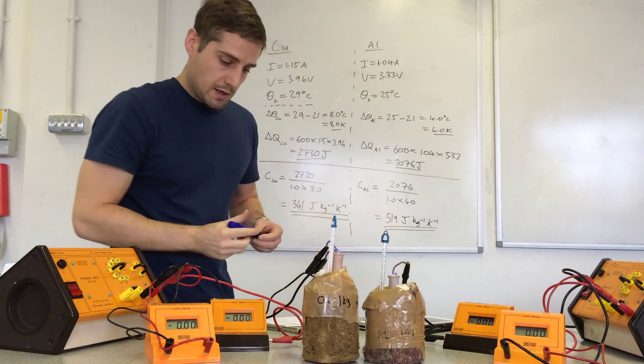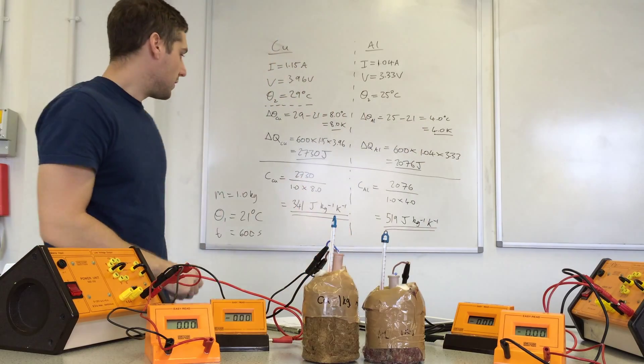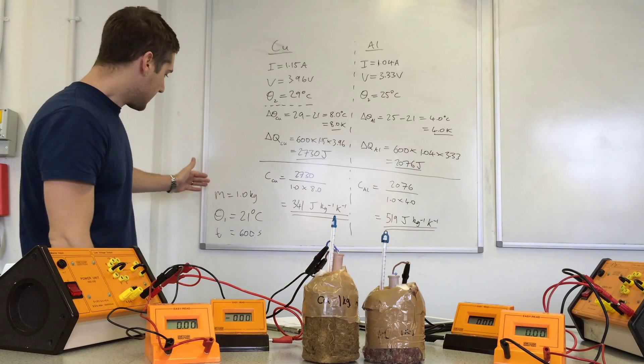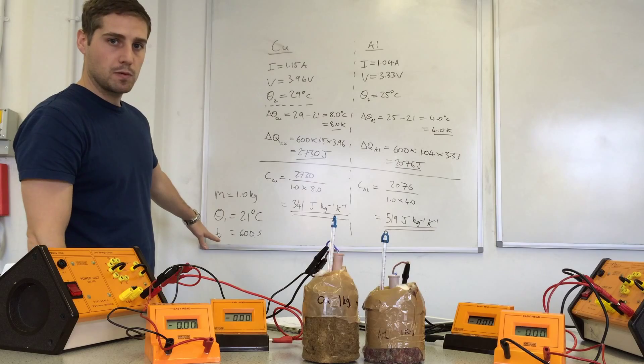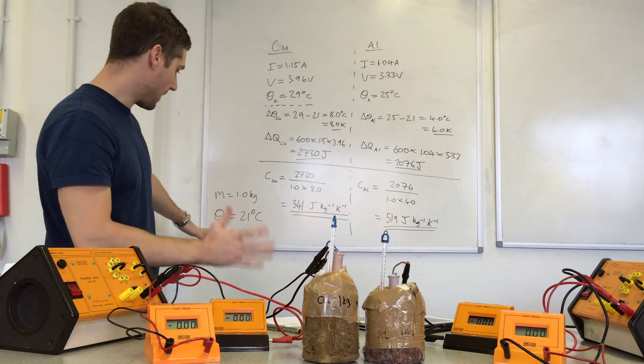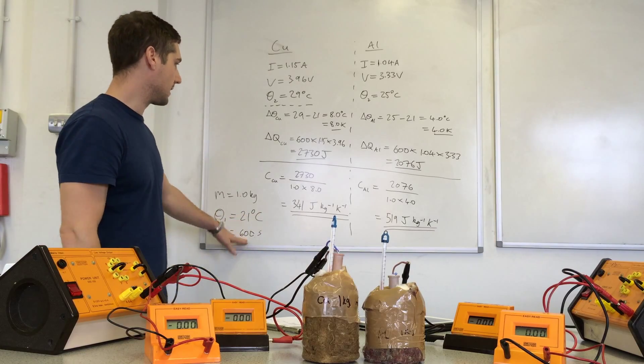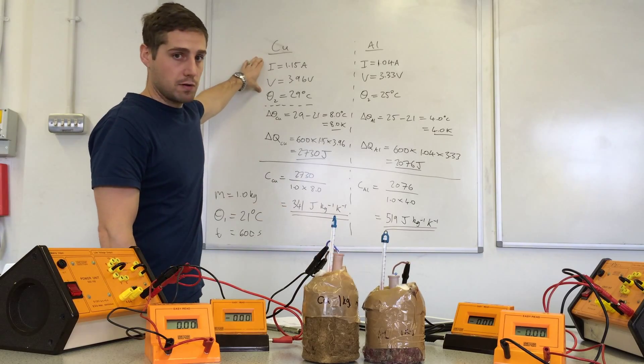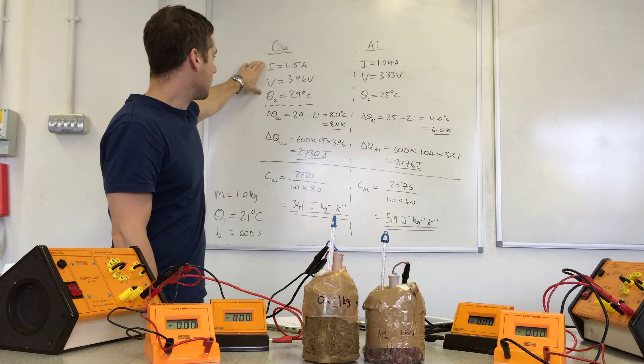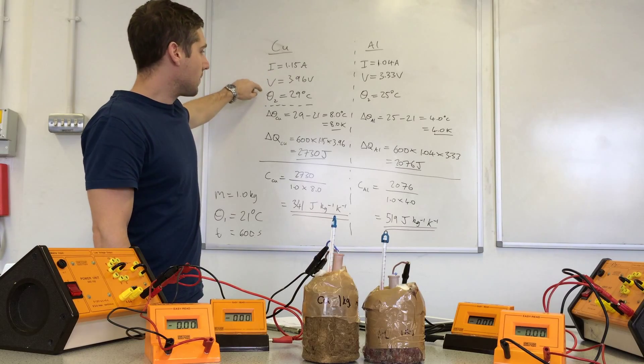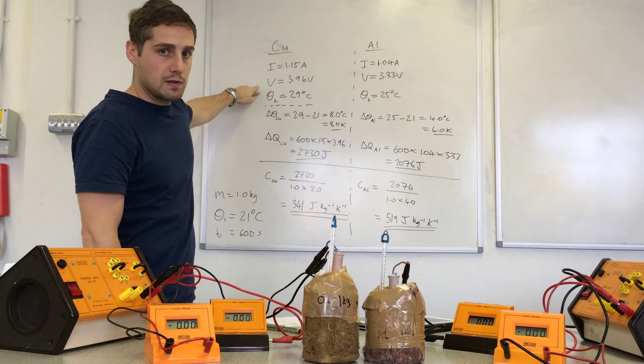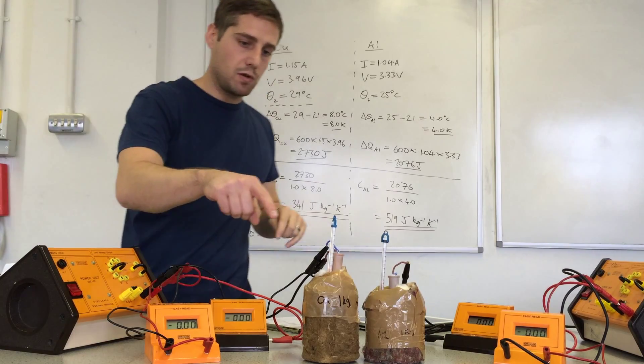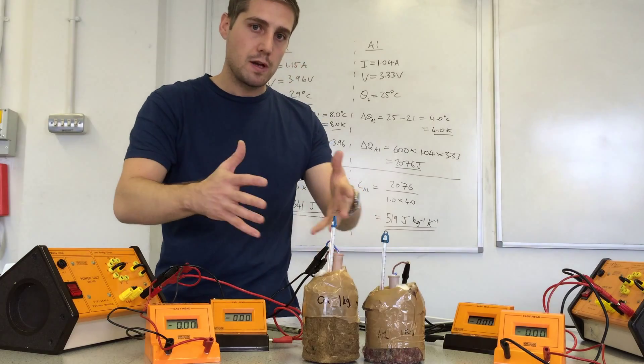So we've determined the specific heat capacities for two metals there. We started with the mass, the initial temperature. We were going to use 10 minutes which is 600 seconds. We put a heater in there, recorded the current and voltage for the heater.